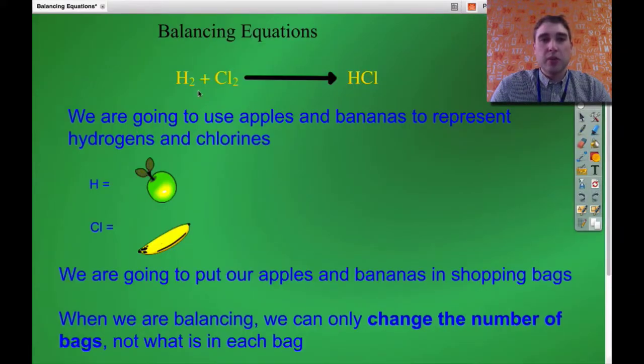So this is the equation we're going to balance. We've got hydrogen and chlorine reacting to produce hydrochloric acid. We're going to use apples to represent hydrogen atoms and bananas to represent chlorine atoms.